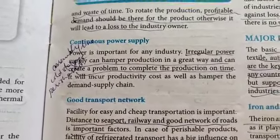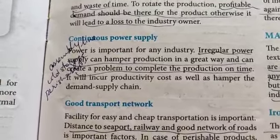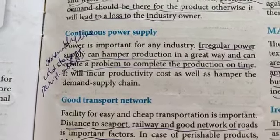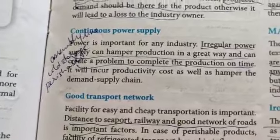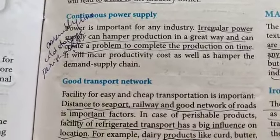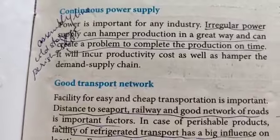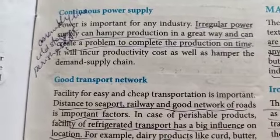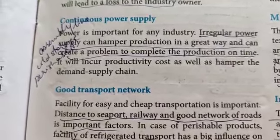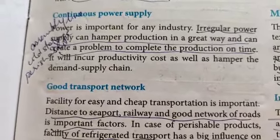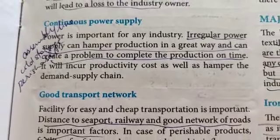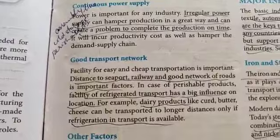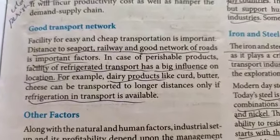Another economic factor is continuous power supply. Power is important for any industry — an irregular power supply can hamper production greatly and create problems completing production on time. For example, for meat products and dairy products in storage, if the power supply is irregular you cannot maintain the required temperature to keep them fresh, the product will spoil and incur a loss for the industry owner.